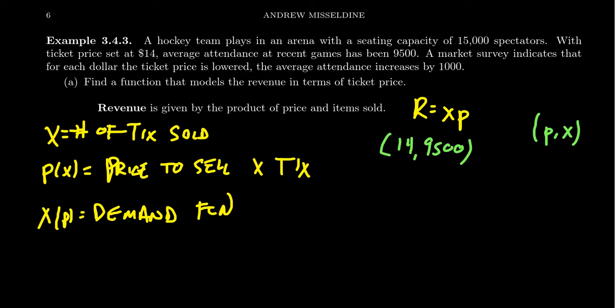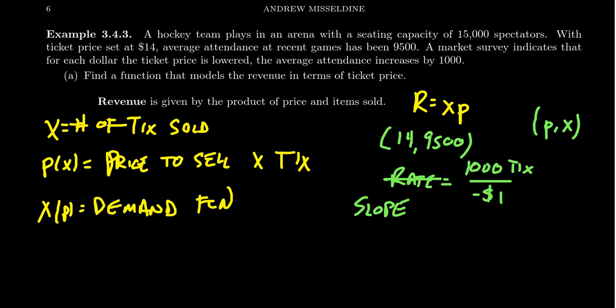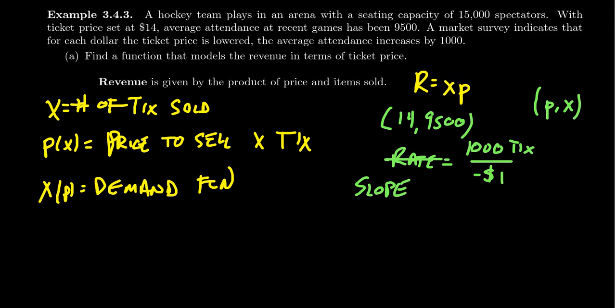Now, we also see that as the price goes down by $1, that the sales will increase by 1,000. So this is actually giving us some type of rate. A rate that tells us that we'll increase by 1,000 tickets each time we go down by $1. And so this is a rate, or if you want to, you can think of it as a slope. And what we're describing here is that the demand function is a linear relationship. The demand is linear given this constant increase of sales as we lower the price. So our rise is 1,000 tickets every time we lower the price by one.